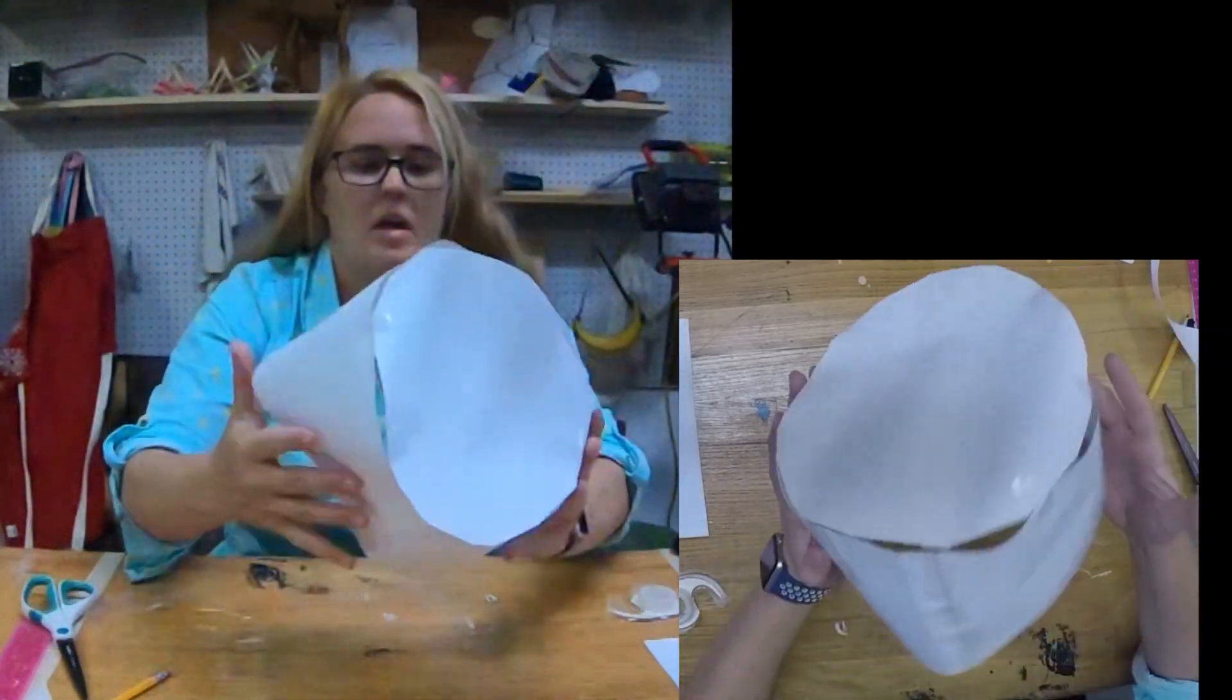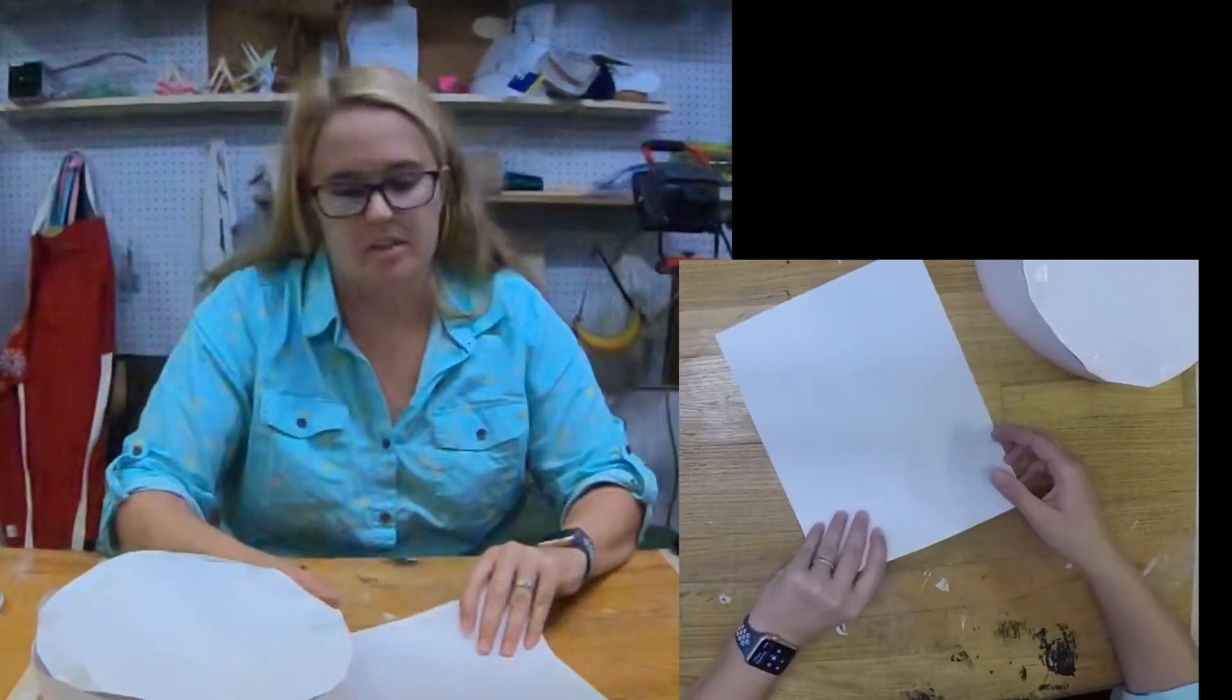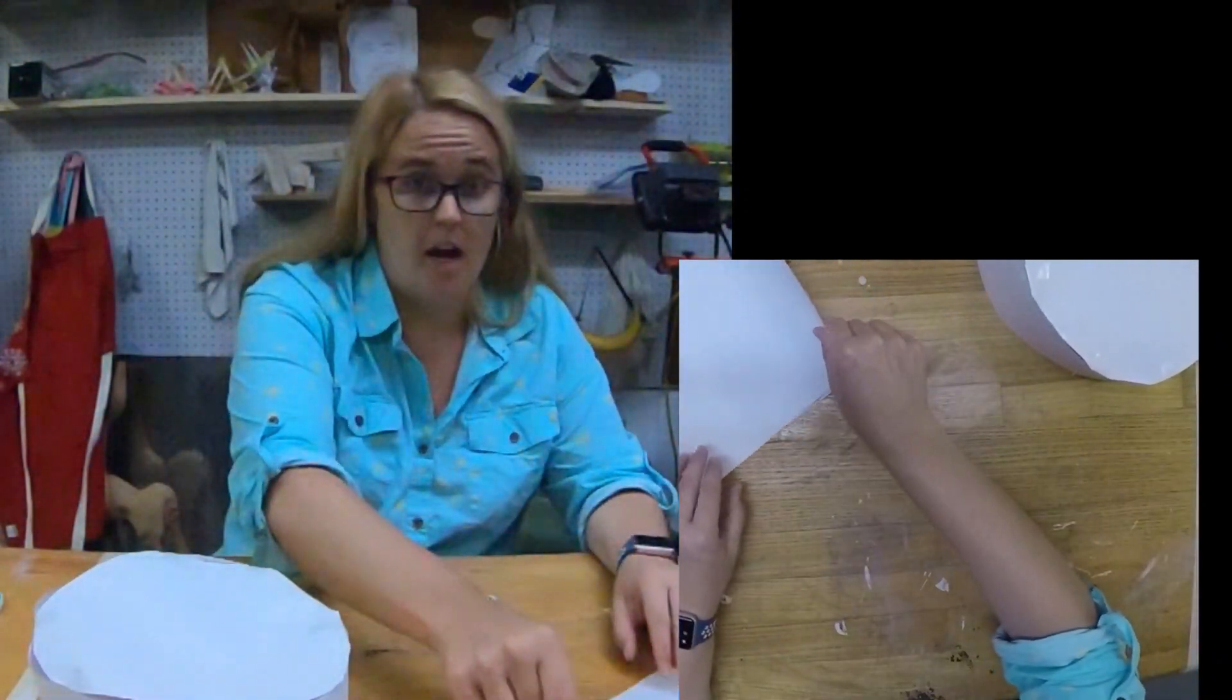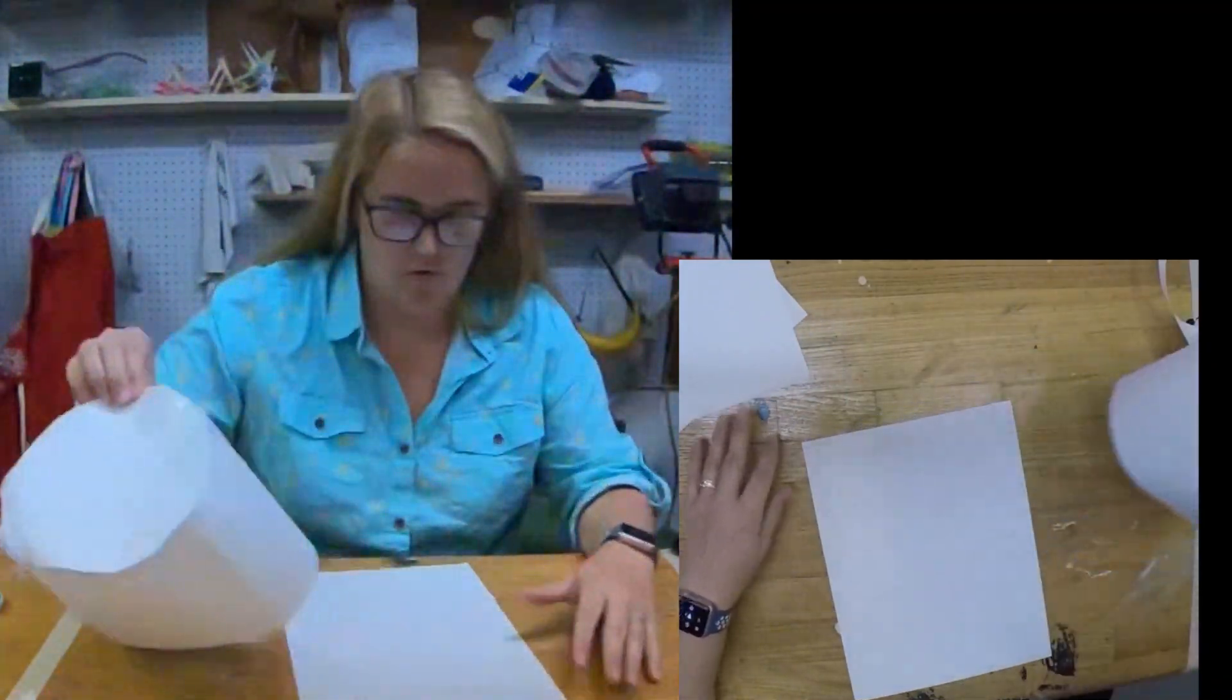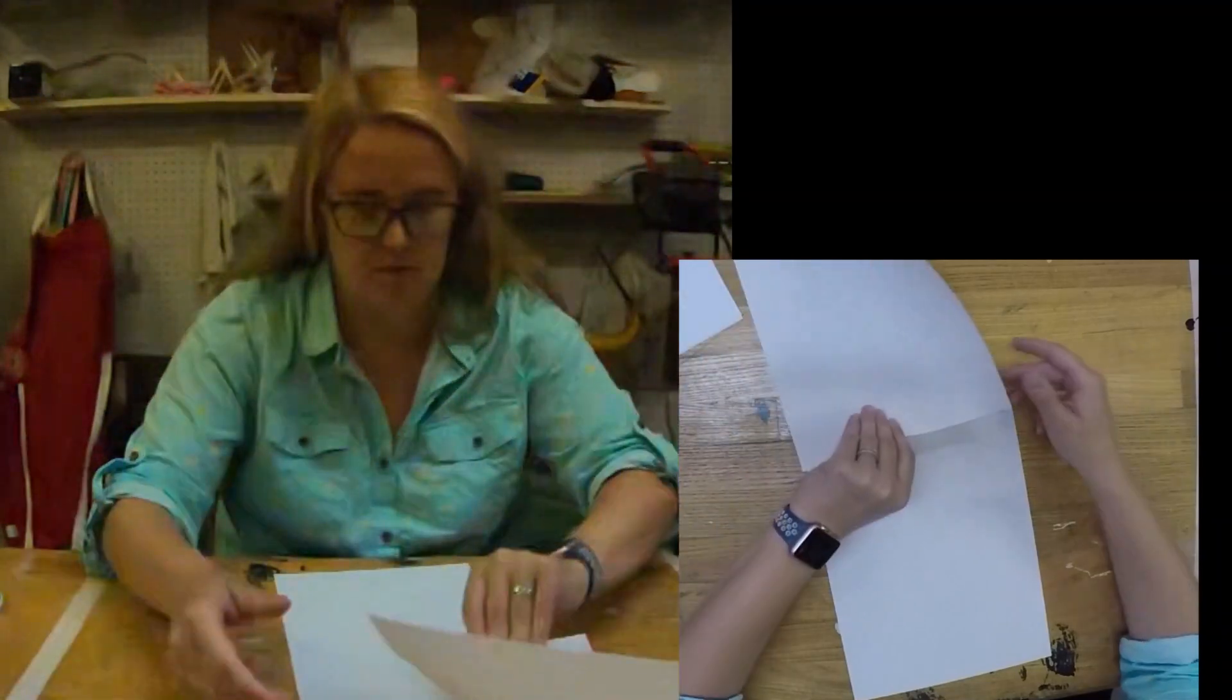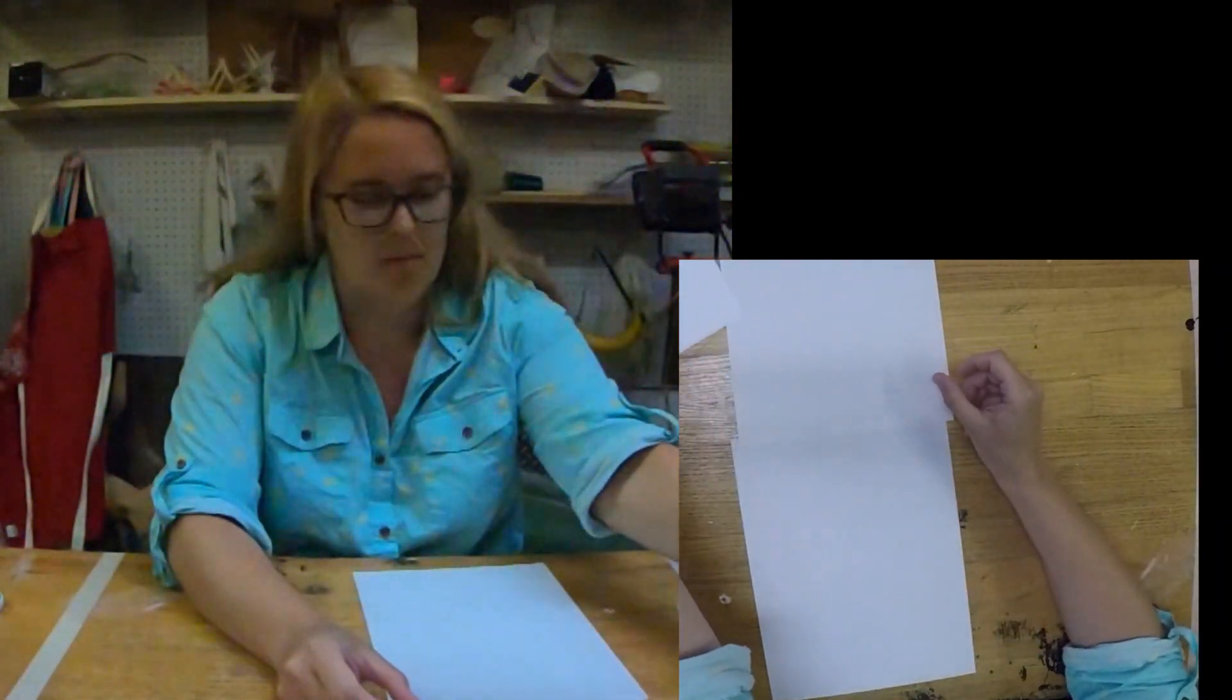And, now for the brim of the hat. Now, if you look at some Kentucky Derby hats. They have some ridiculous brims. You could do this any number of ways. In any number of sizes and shapes. What I'm going to do. Is I'm going to put four pieces of paper together.